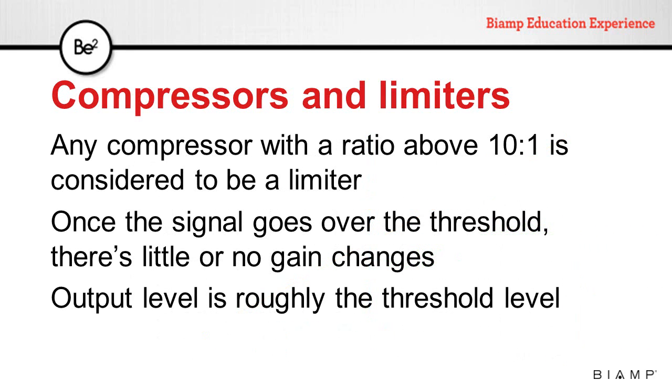When we set the compressor ratio above 10 to 1, we usually call it a limiter. Any signal above the threshold will have little or no gain changes, so the output level is going to be roughly the same level as the threshold level.